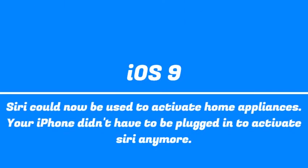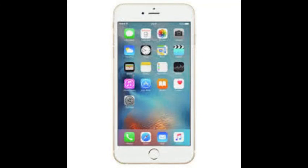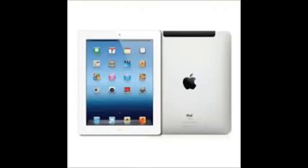Next on the list is iOS 9. Siri could be used to control the lights and appliances with HomeKit. Your iPhone didn't have to be plugged in to activate Siri anymore. Phones include the iPhone 6s Plus and the Apple iPad 3. The release date was 1st of September 2015.